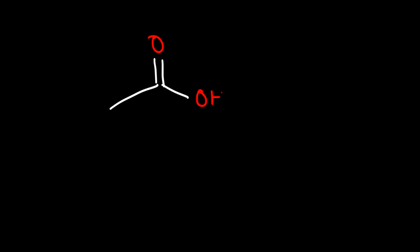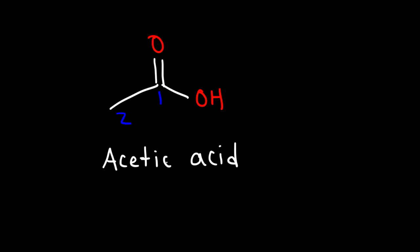In this example we have two carbons. The common name for this particular carboxylic acid is acetic acid, and the IUPAC name is ethanoic acid.